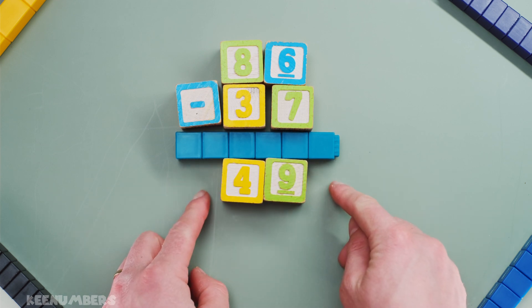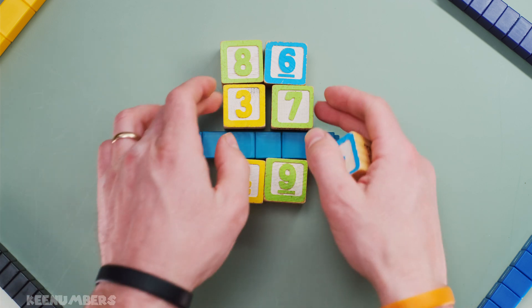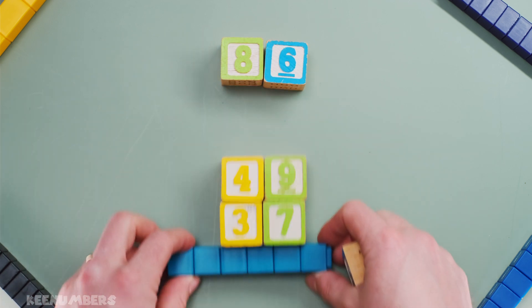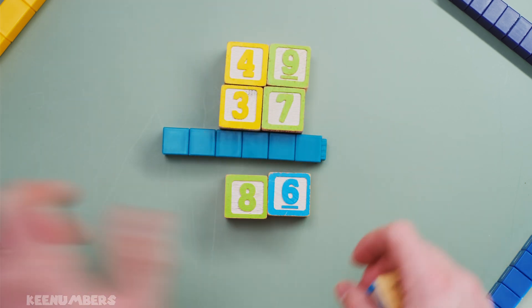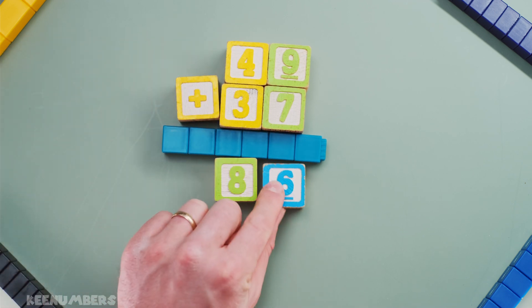So 86 minus 37 is 50 minus 1. But 50 minus 1 is a good old 49. That's your final answer. And you can always check: 49 plus 37, does that give you 86? You bet it does. 49 plus 37 is 8 tens and 6 ones, A.K.A. 86.